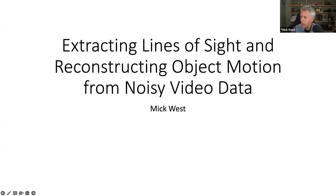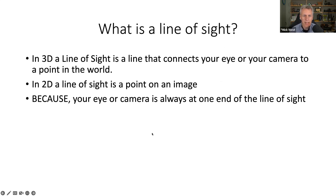I'm just going to share my screen real quick. Here is my talk. I apologize for the long title. I'll try to make it as interesting and as accessible as possible. What is a line of sight? In three dimensions, a line of sight is a line that connects your eye or your camera to a point in the world. In two dimensions, a line of sight is a point on an image.